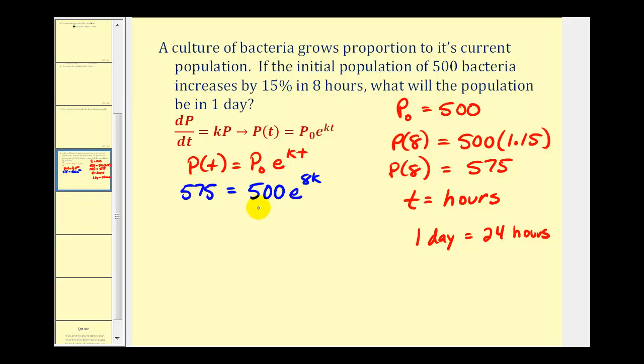Now we'll isolate e by dividing both sides by 500. So we have 575 divided by 500 must equal e raised to the power of 8k. Now we can take the natural log of both sides of the equation and apply the power property of logarithms.